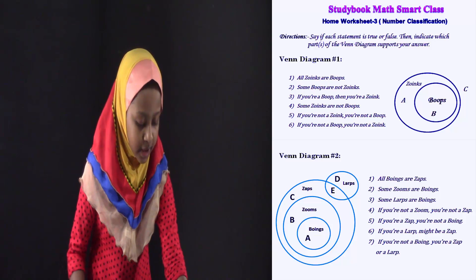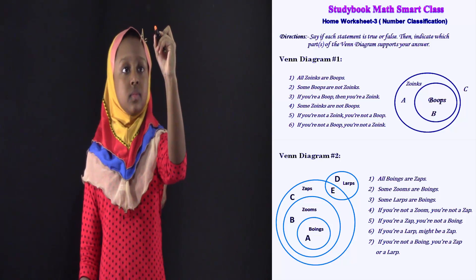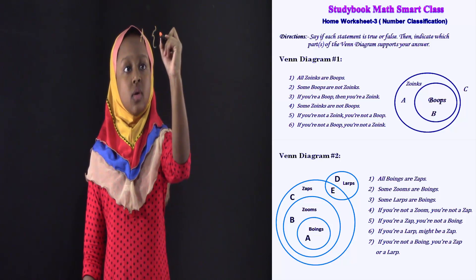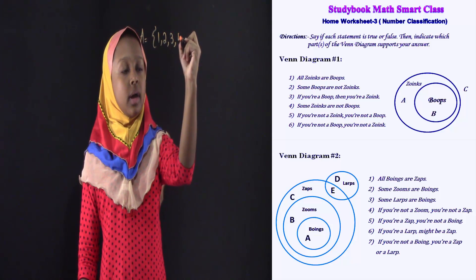I'm going to draw here set A. Set A equals, I'm going to write here, one, two, three, four, and five.